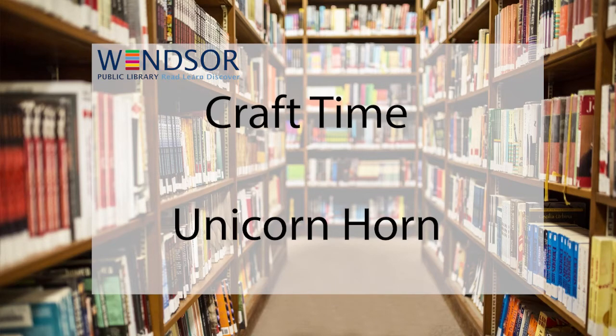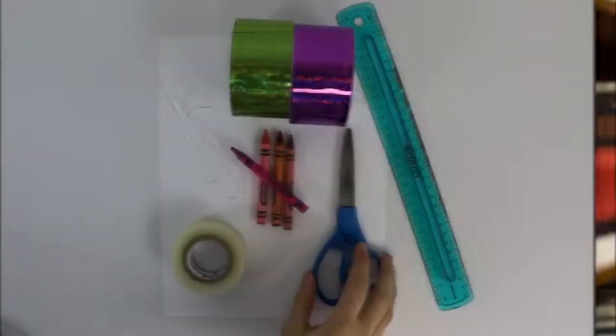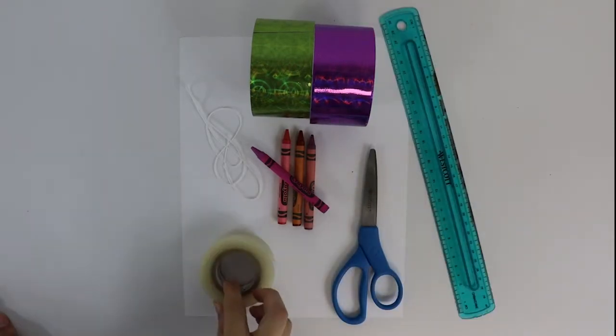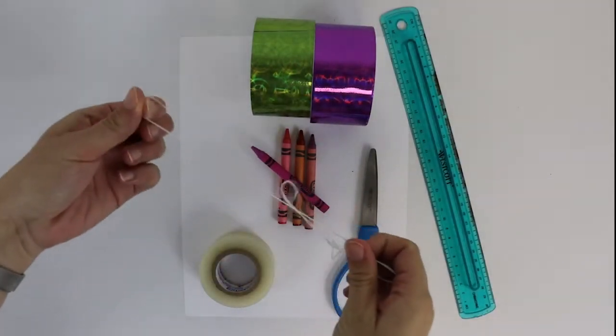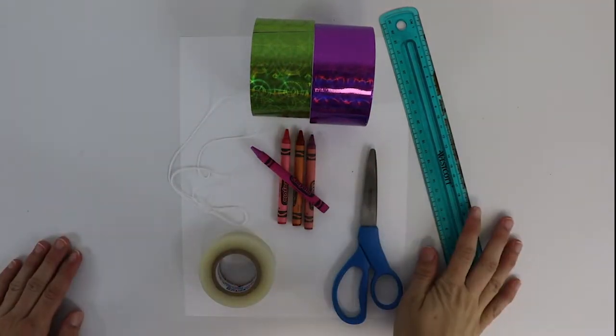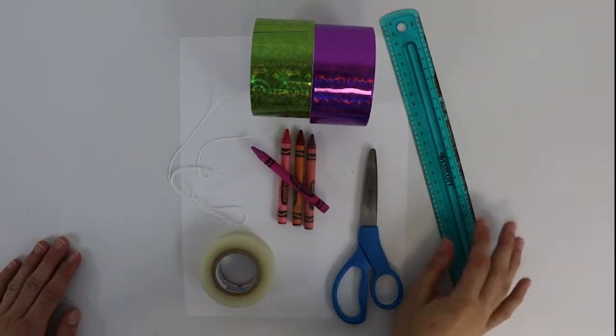Today we're going to learn how to make the unicorn horn. For this craft, all you need is some paper, a ruler, scissors, elastic or string, tape or glue, and whatever craft supplies you have around to decorate.